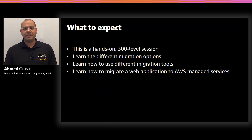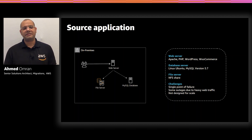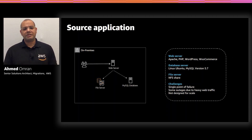So let's start with the source application. We are talking about a simple online store which allows users from all over the world to buy unicorns. This online store consists of a web server running on a LAMP stack, where we have a Linux operating system, Apache HTTP server connected to a MySQL database, and using PHP as the programming language. On top of PHP, we have WordPress as a content management system with WooCommerce, which is an e-commerce plugin. We also have a file server which is used to store the WordPress content, including plugins, custom functions, and images.